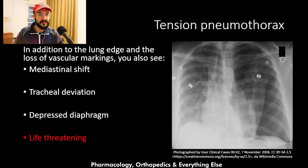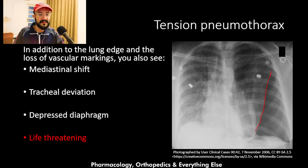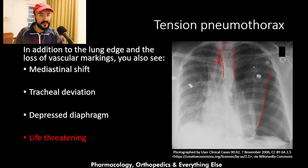This is a frontal chest x-ray of a tension pneumothorax. You can see the lung edge going down here, and beyond it there are no vascular markings. You can also see that the trachea is deviated — the trachea runs like this next to the spine — and it is notably deviated to the right. The heart is also shifted, indicating mediastinal shift.